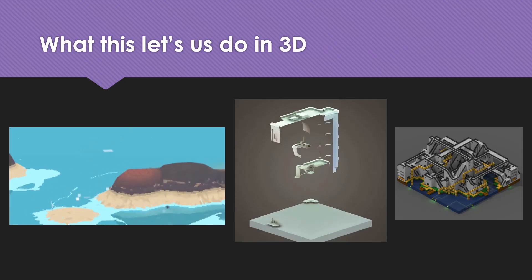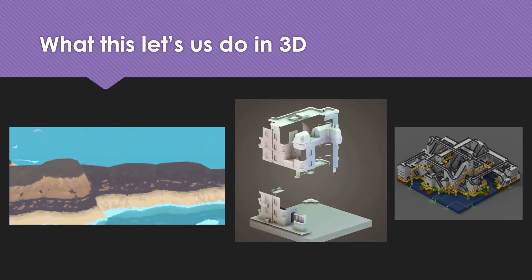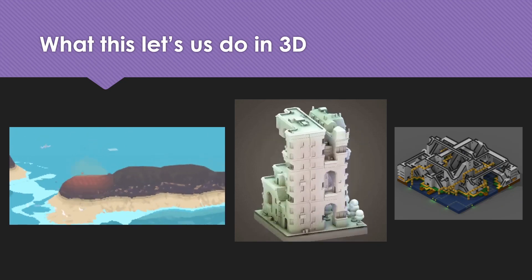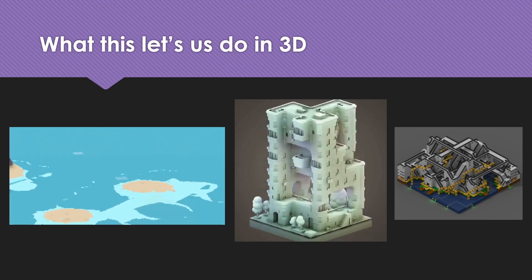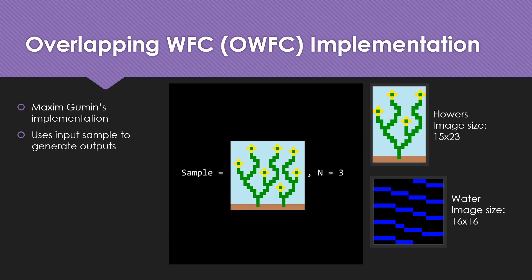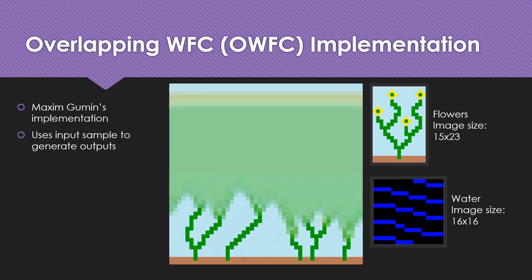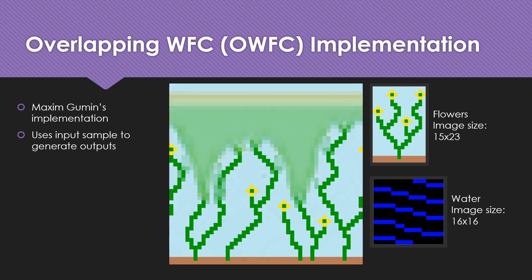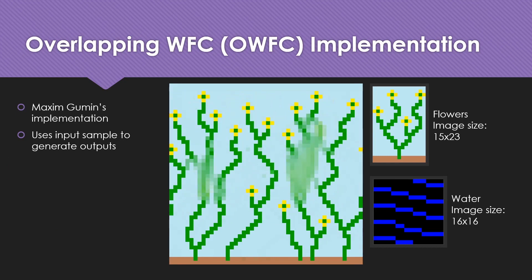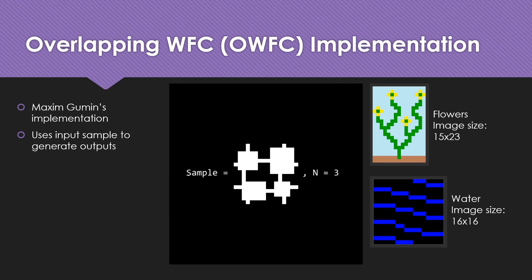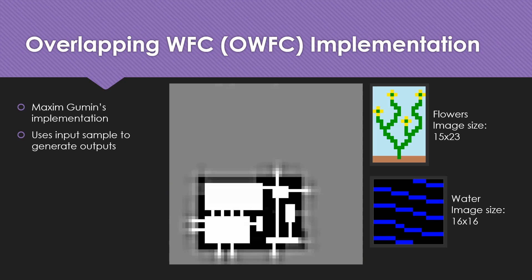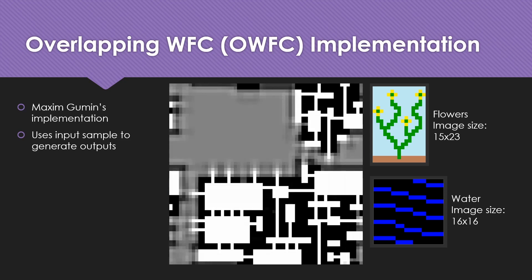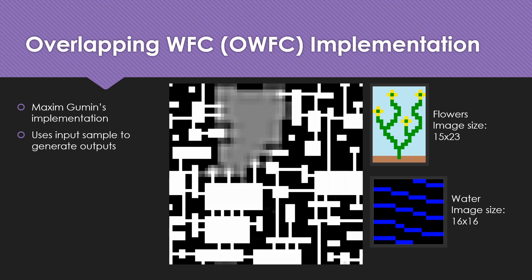Since this algorithm is content-agnostic, in 3D it can also use 3D visualization data of 3D regions and generate outputs. This is called the overlapping wave function collapse implementation, because it overlaps kernels to determine output. This is the implementation proposed by Maxim Gumin in 2016, and it uses input samples to generate images as discussed.